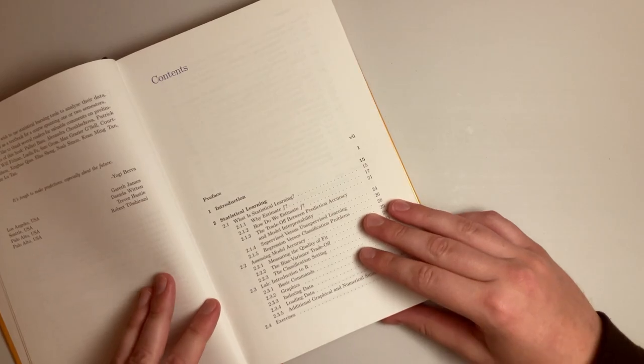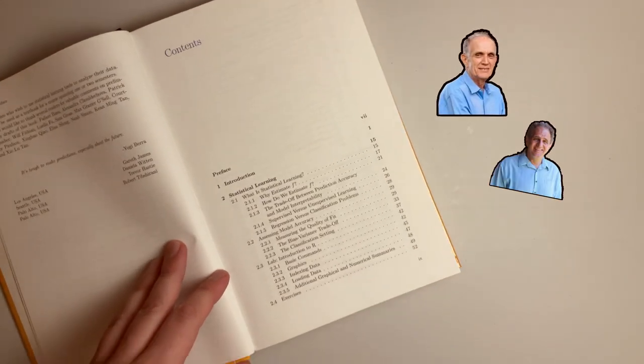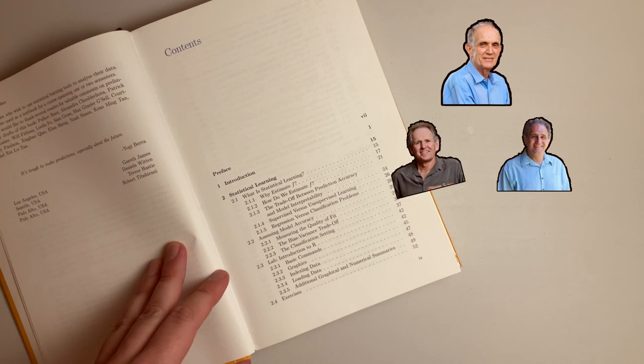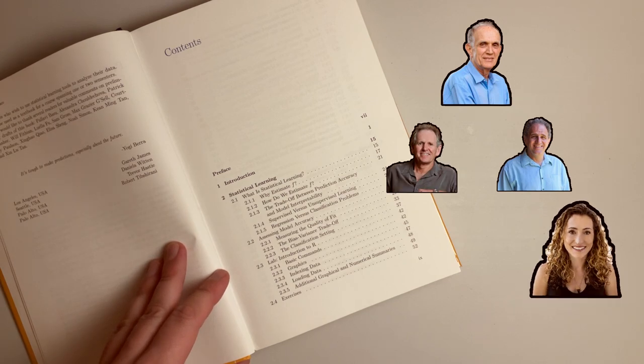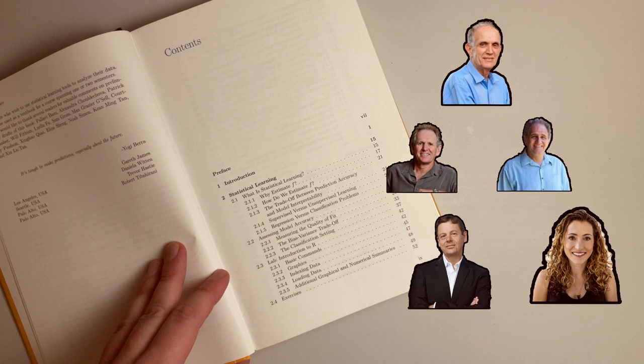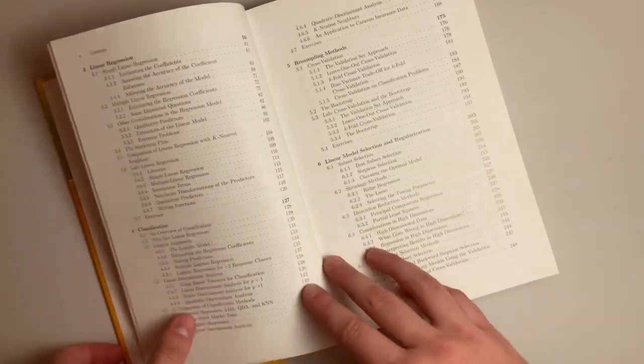It is written by giants in the field. Tibshirani was a student of Brad Efron and the inventor of the lasso. Hastie has researched non-parametrics most of his career. Daniela Witten was a student of Tibshirani and Hastie, and Forbes put her on the 30 under 30 list. Gareth James was also a student of Hastie. This book does a good job holding the reader's hand through a topic.